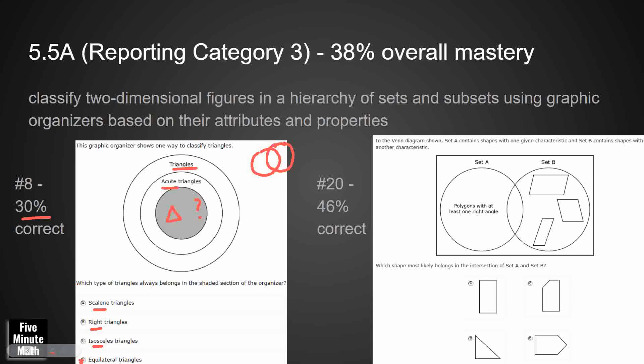Equilateral triangles are always going to be acute, but there's a visual there with nothing else to help me. I need to know as a student what a scalene, isosceles, and equilateral triangle is. And then on number 20, they did a little bit better. This is what we would consider more of a traditional Venn diagram here, but set A has words, polygons with at least one right angle. Set B doesn't have any words. So we have to infer what our rule is.